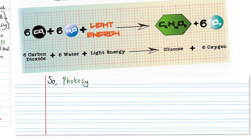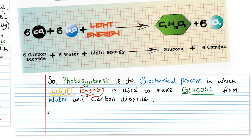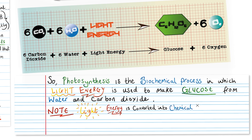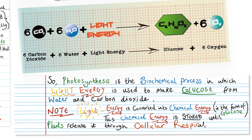Photosynthesis is the biochemical process in which light energy is used to make glucose from water and carbon dioxide. Note that the light energy is converted into chemical energy in the form of glucose, and this chemical energy — the glucose — is stored until plants release it through cellular respiration.